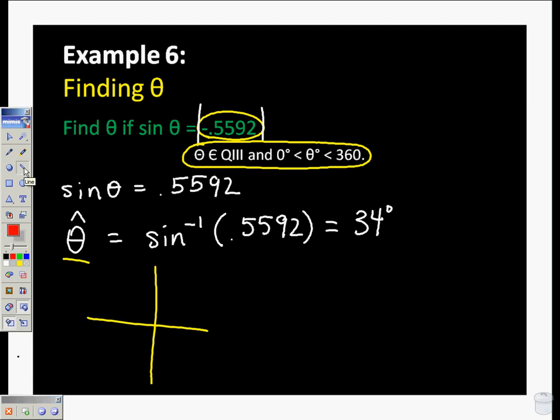So if we go ahead and put this where it belongs, in quadrant 3. So we're in quadrant 3 with this guy. And if we go ahead and label it, the reference angle is 34 degrees. And if it's in quadrant 3, that means that this angle here is the 34 degrees.